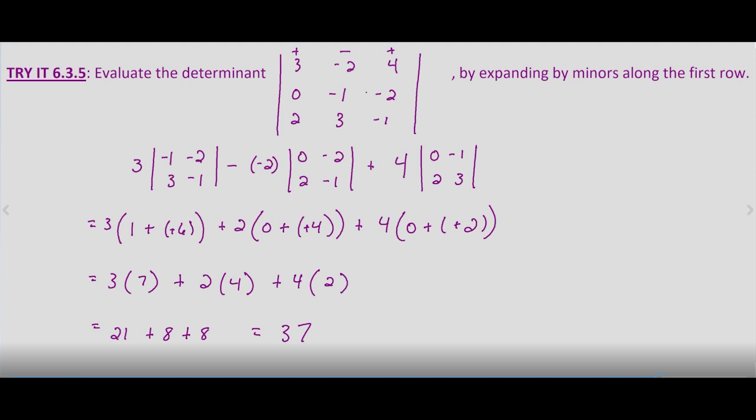But evaluating the determinant by expanding by minors along the first row, you take each term and multiply it by its minor, and then you find the sum and difference in the order of positive 3 times its minor, minus negative 2 times its minor, plus 4 times its minor. Remember, when we expand by the first row, those signs are plus, minus, plus.